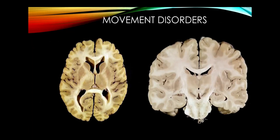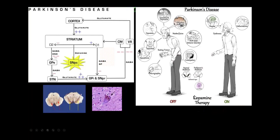For basal ganglia anatomy: the caudate and putamen are lateral; the internal and external segments of the globus pallidus are medial; the subthalamic nucleus, where a lesion causes contralateral hemiballismus; and the substantia nigra, involved in Parkinson's disease. The PARS compacta of the substantia nigra degenerates in Parkinson's — you need to know what a Lewy body looks like.